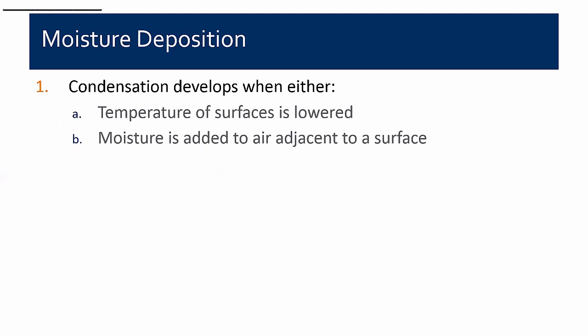Condensation develops when one of two things happens: either the surface temperature in the space is lowered, or moisture is added to the air adjacent to the surface. If there wasn't condensation before and now there is, we either lowered the temperature or added moisture to the air.